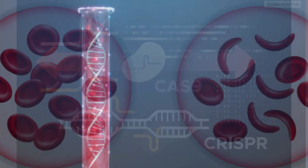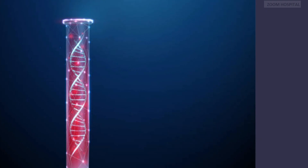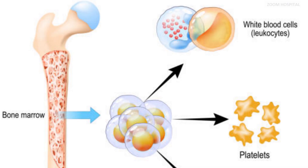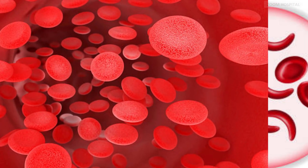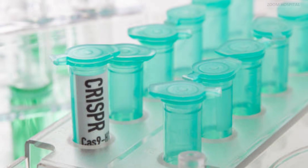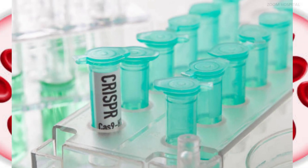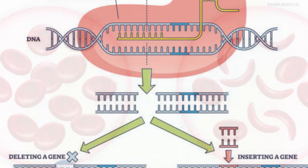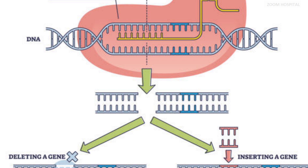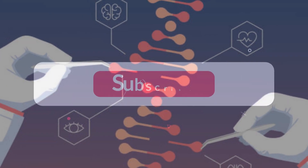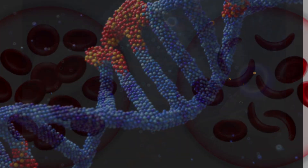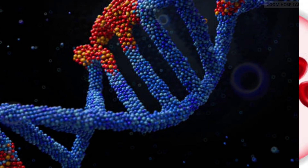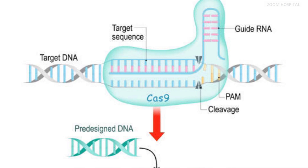Step three: isolation of patient cells — hematopoietic stem cells are collected from the patient's bone marrow or blood. These cells have the potential to develop into various types of blood cells, including red blood cells. Step four: CRISPR Cas9 editing — in the laboratory, the isolated stem cells are exposed to CRISPR Cas9 along with a specific guide RNA designed to target the specific gene to remove. Once inside the cell, the Cas9 enzyme, guided by the guide RNA, precisely cuts the DNA at the targeted location.